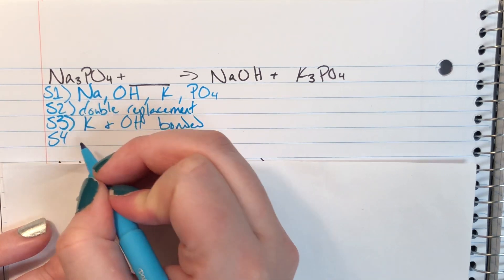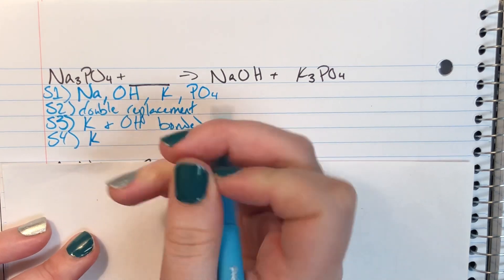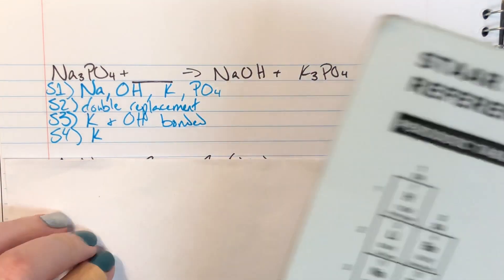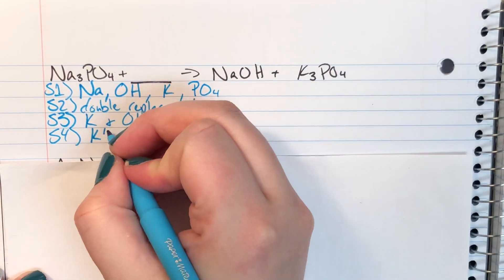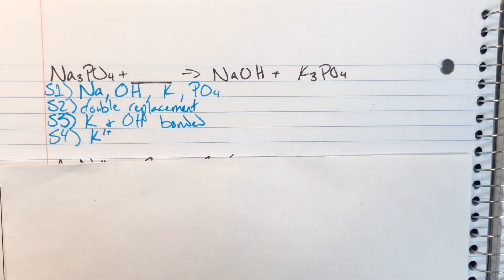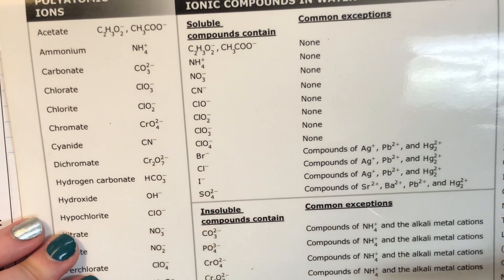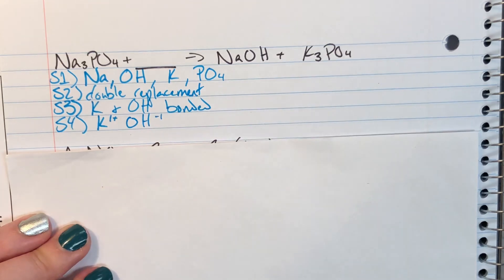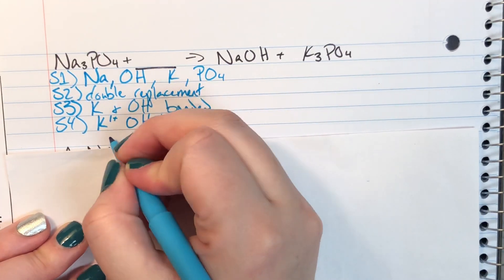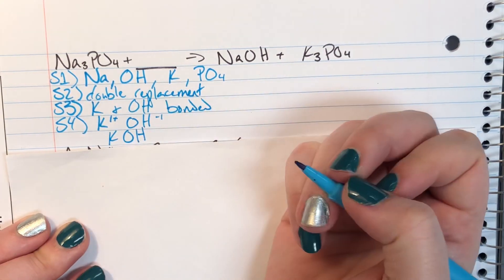For step four, I figure out what that compound looks like. Potassium is in column one, so it has a positive one charge. Hydroxide is a polyatomic ion found in the periodic table with a charge of negative one. When I exchange charges for subscripts, I just leave them as is.